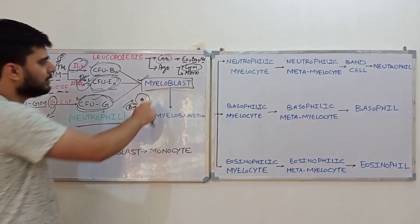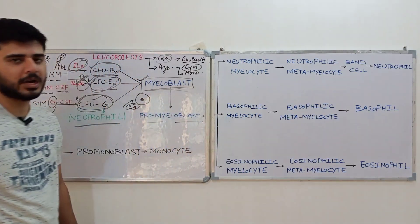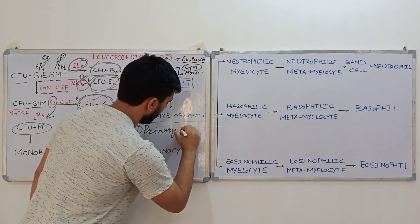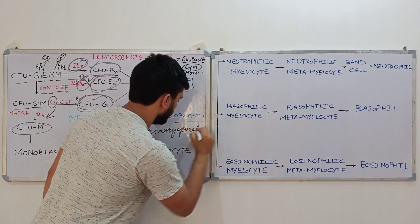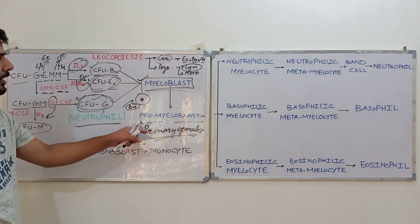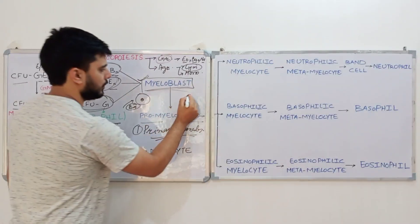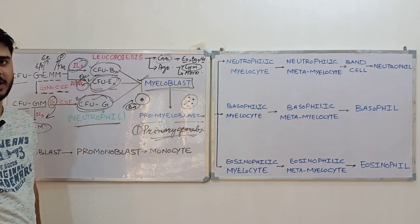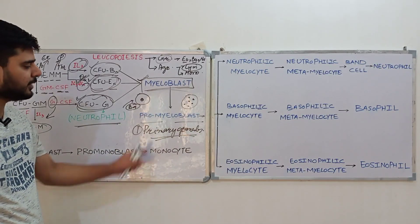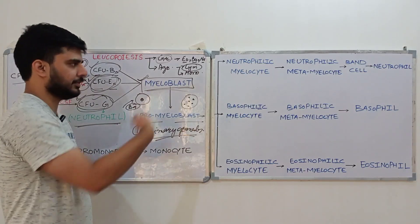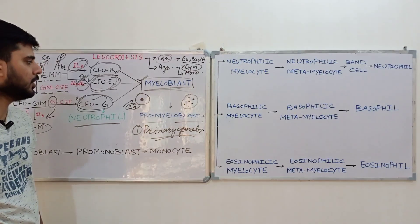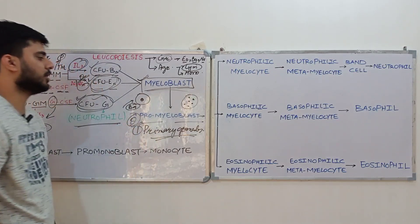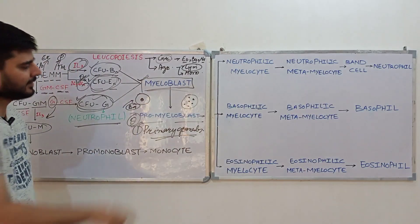The myeloblast is then converted into the promyelocyte. In the promyelocyte stage, primary granules — also called azurophilic granules — are produced. These primary granules are present in all granulocytes. Granulocytes have two types of cytoplasmic granules: primary (azurophilic) granules and secondary granules. Primary granules are similar across all types. The formation of primary granules in the promyelocyte stage is an important exam point.